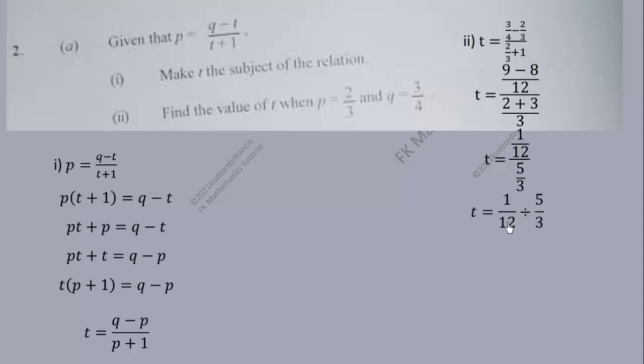So we can now reciprocate the second fraction and multiply it by the first fraction. So we can cancel: 3 goes here once, 3 goes here 4 times. 1 times 1 is 1, then 4 times 5 is 20.